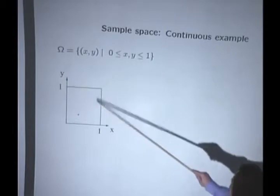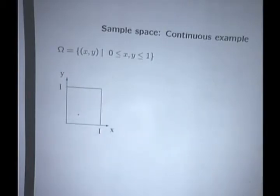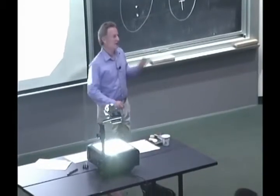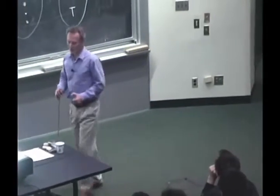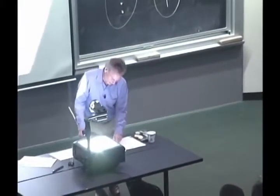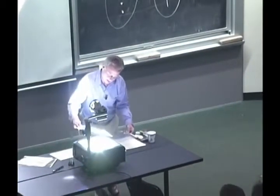Intuitively, that probability would be zero. Any individual point in this diagram, in any reasonable model, should have zero probability. If you just tell me that any individual outcome has zero probability, you're not really telling me much to work with.